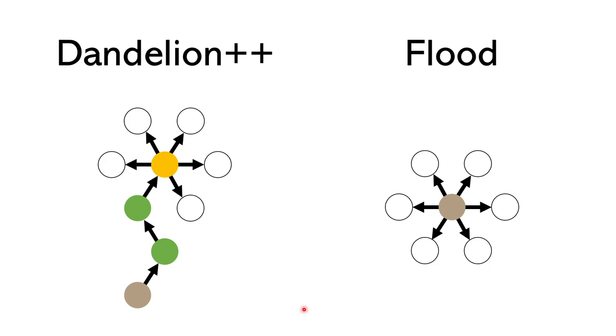Dandelion++ is named based off the way the transaction broadcast looks like. It looks like a Dandelion, and I tried to replicate that here. Let's say that this brown circle is the initial origin node. This is where the transaction is coming from, and it needs to make its way to the rest of the nodes on the network such that it can be included in the next block.